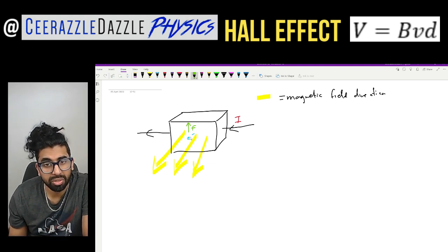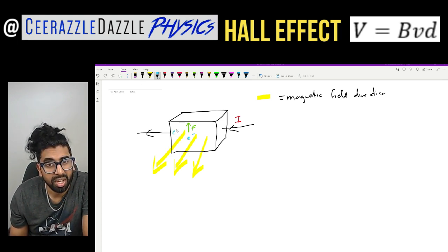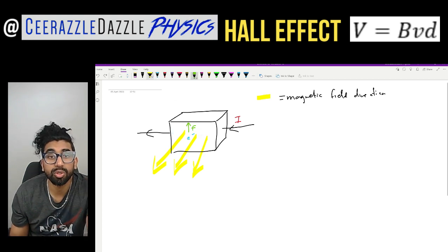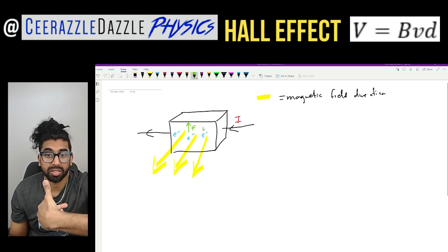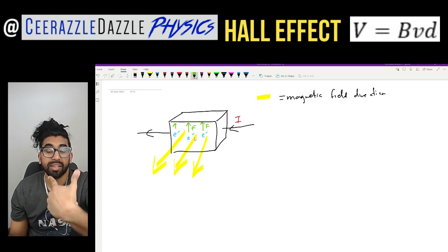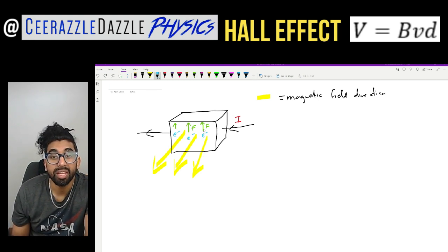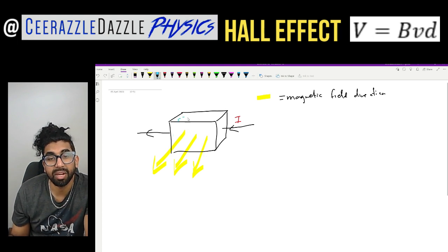So now we know that the charged particle experiences a force and it will move upwards. As time goes on, all of those charged particles — all of those electrons — get a force upwards. The forces are all acting upwards. So the top plate will gain all of these electrons: E minus, E minus, E minus, E minus — all the electrons accumulate at the top.